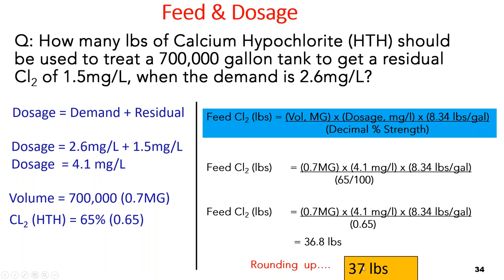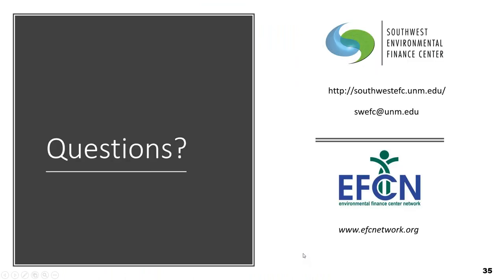On your answer sheet, you might get options close to your calculated value — maybe 40 pounds or 37 pounds. Choose the answer closest to what you have calculated. That brings us to the end of our math session, and we're going to start with the Q&A. If you have any questions you asked earlier, this is when we go ahead and answer them.